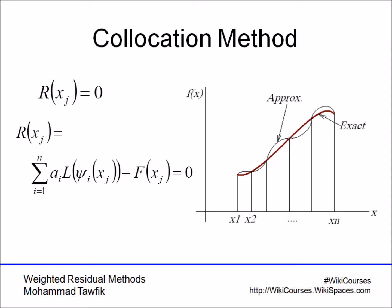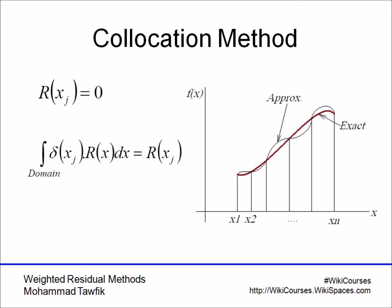That's how we get the collocation method. In a more mathematical way of presenting the collocation method, we can assume that we selected our weighing functions to be the Dirac delta function at X_J. When you multiply a function by the Dirac delta function and integrate over the domain, you end up with evaluating that function at those points. If it's not clear, you may skip this part and continue.